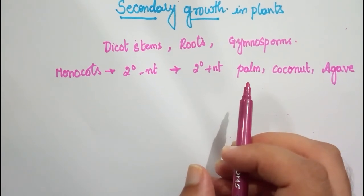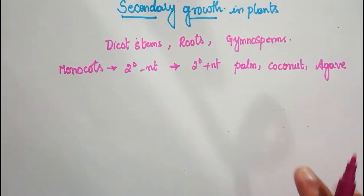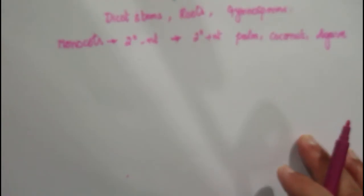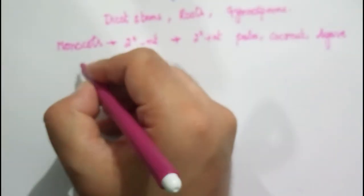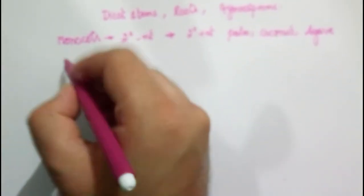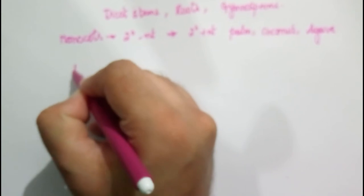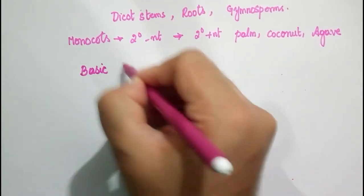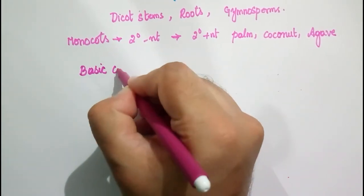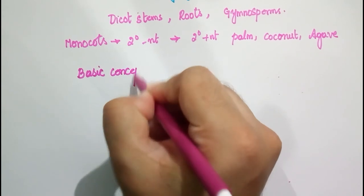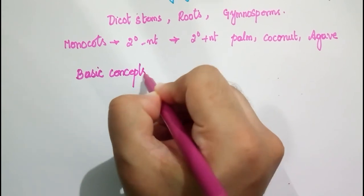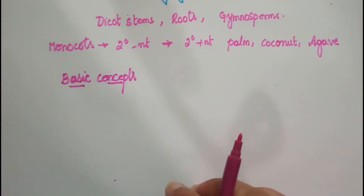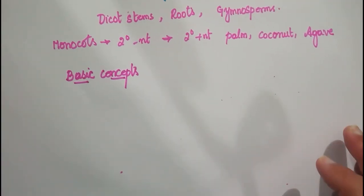Pteridophytes and monocots have only primary structure, but in gymnosperms and dicots we see secondary growth. In this video, we will be focusing on the basic concepts required to understand secondary growth.